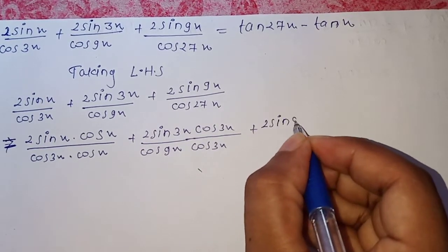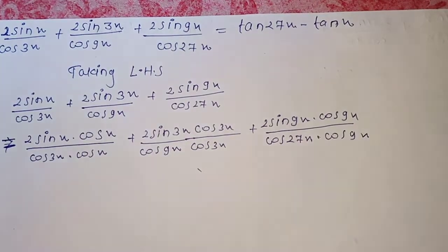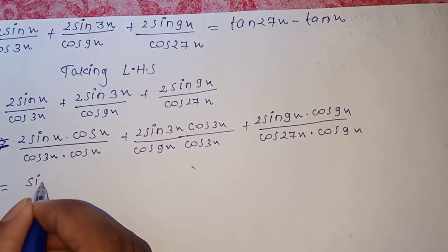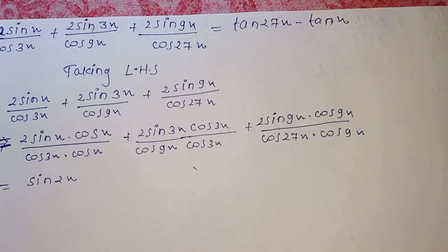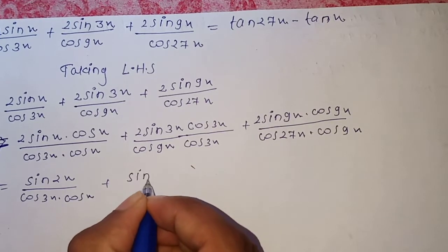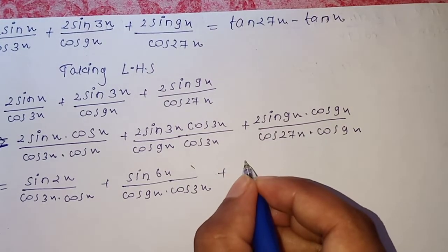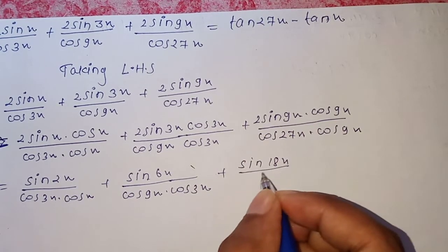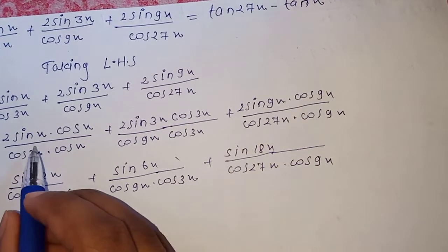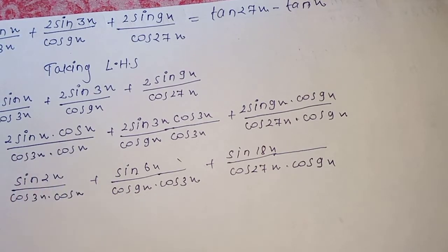This gives us: plus 2sin(9x)·cos(9x) / (cos(27x)·cos(9x)). Applying the formula sin(2θ) = 2sin(θ)cos(θ), we get: sin(2x) / (cos(3x)·cos(x)) + sin(6x) / (cos(9x)·cos(3x)) + sin(18x) / (cos(27x)·cos(9x)).